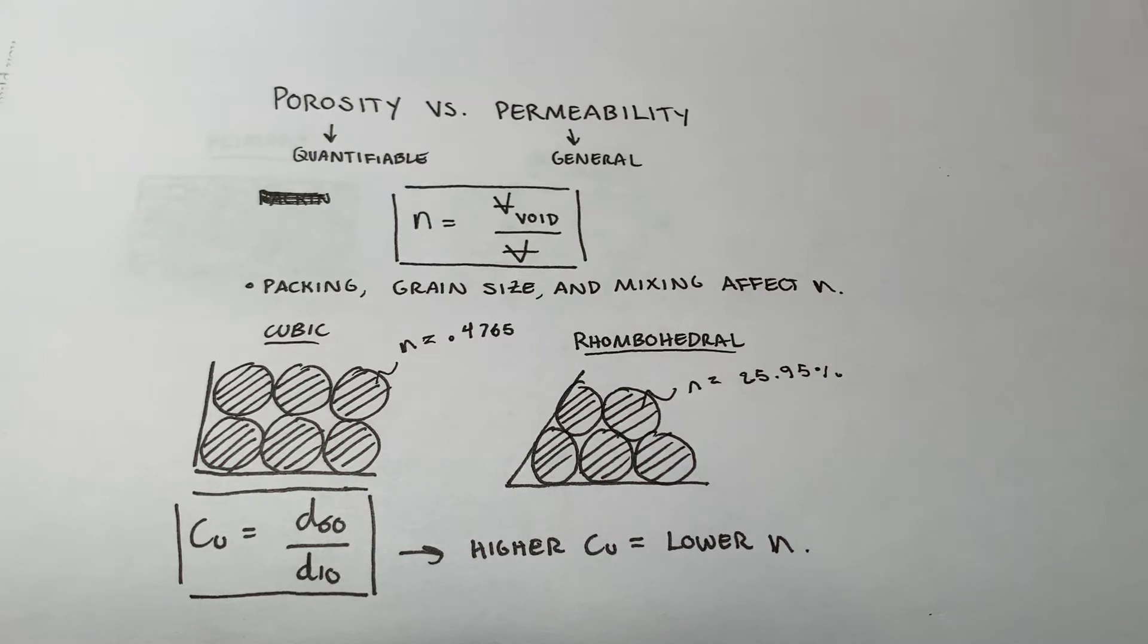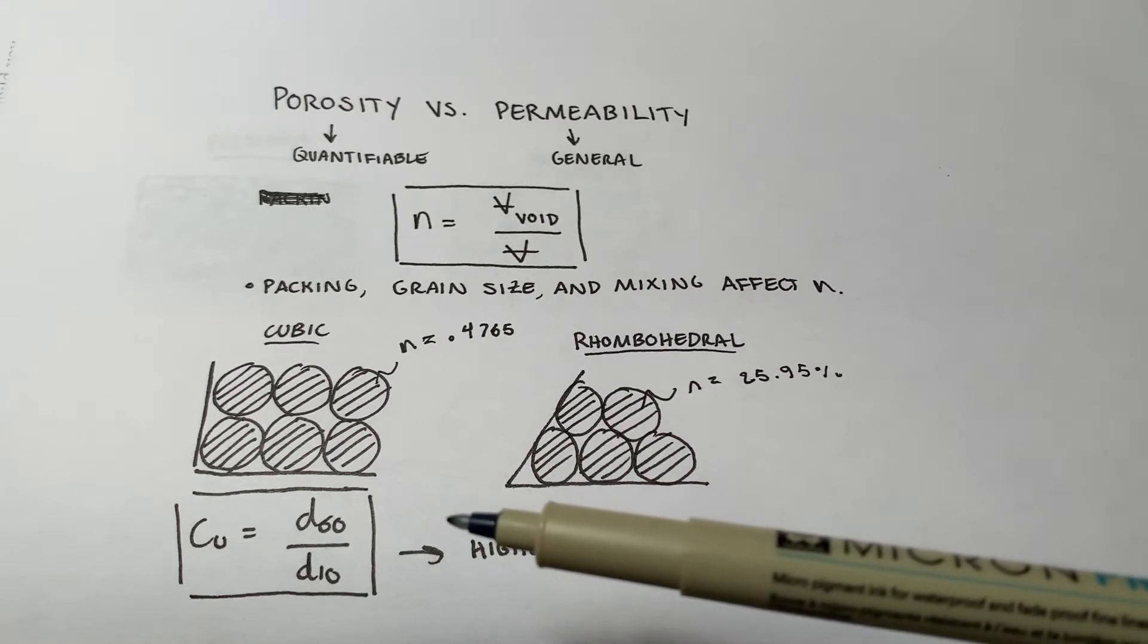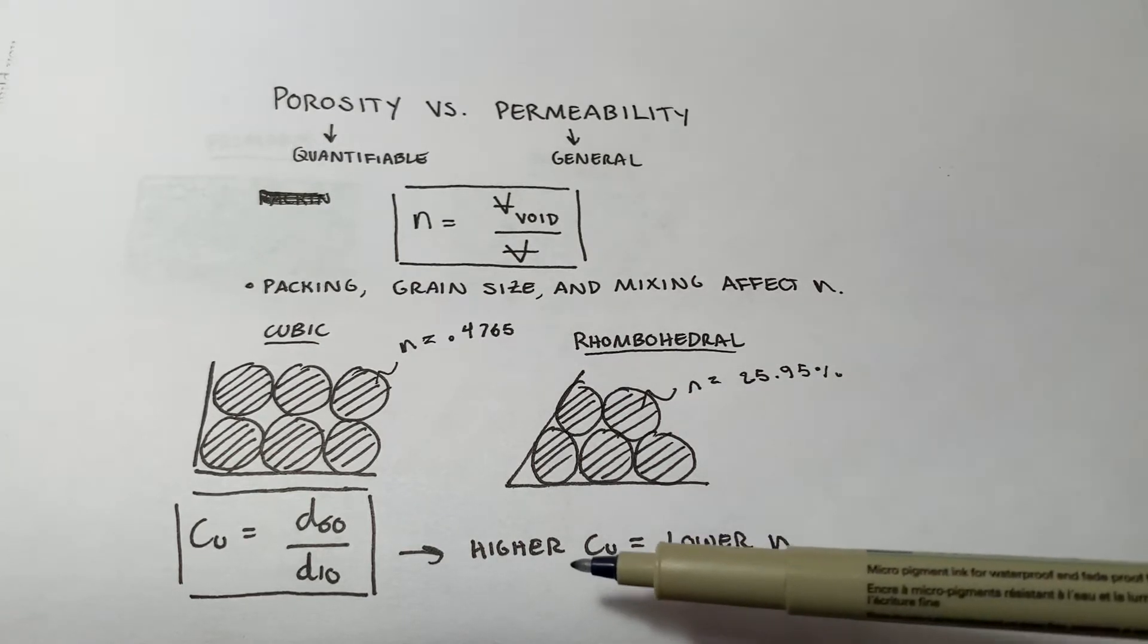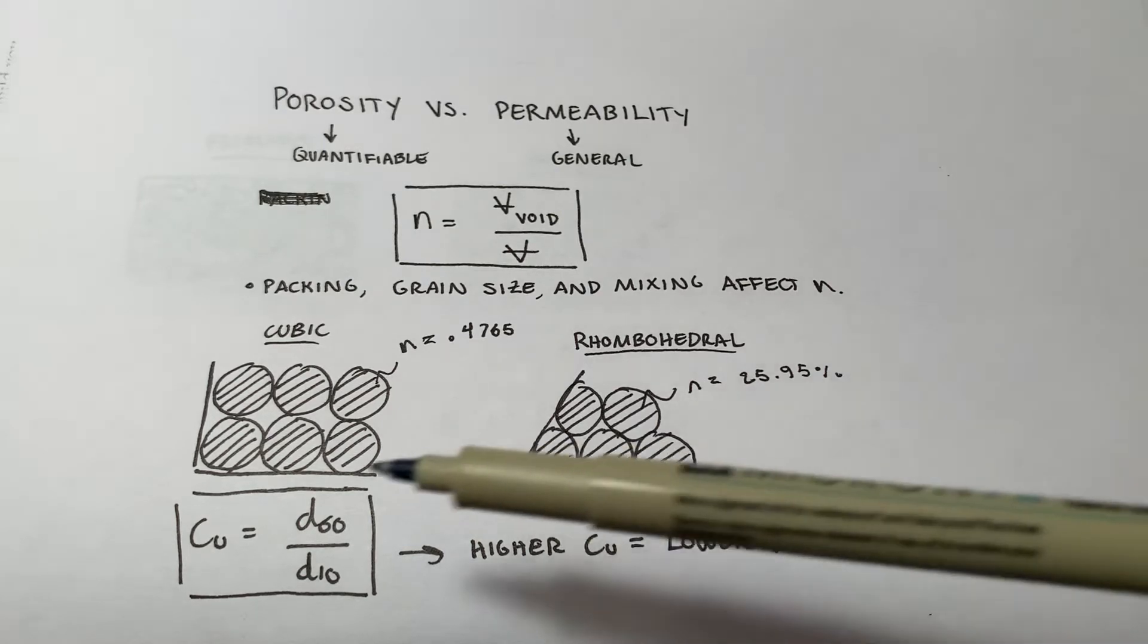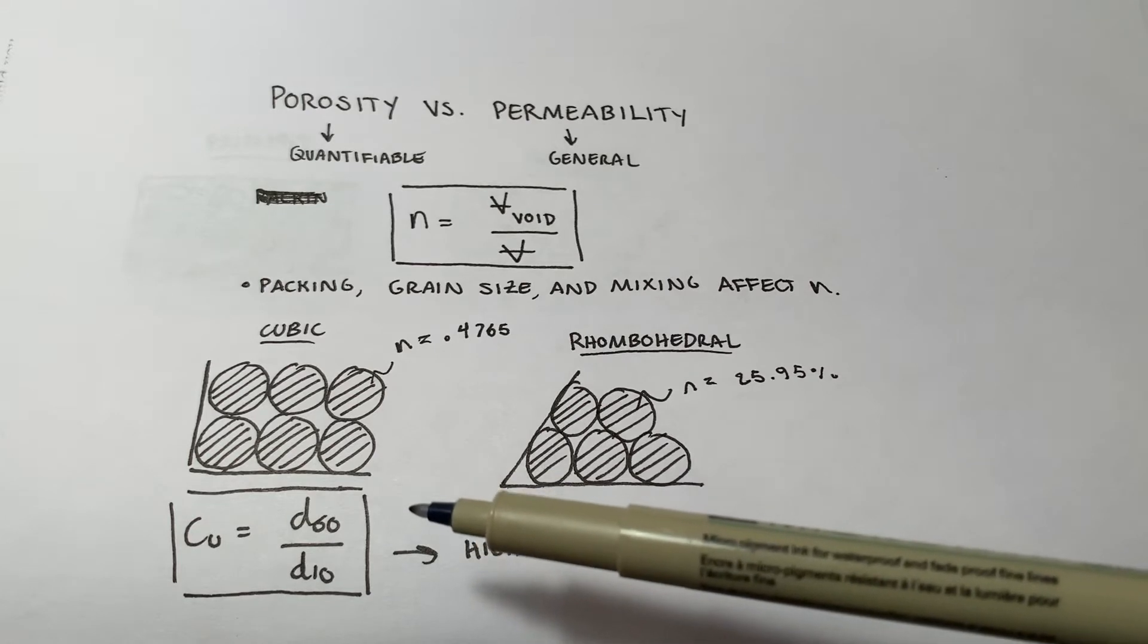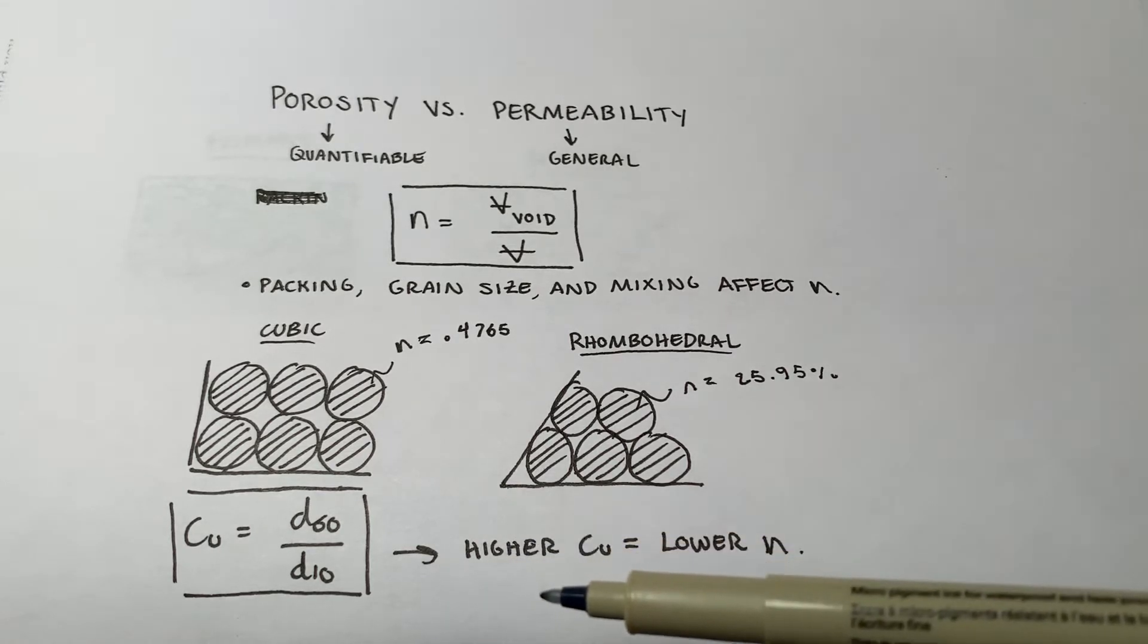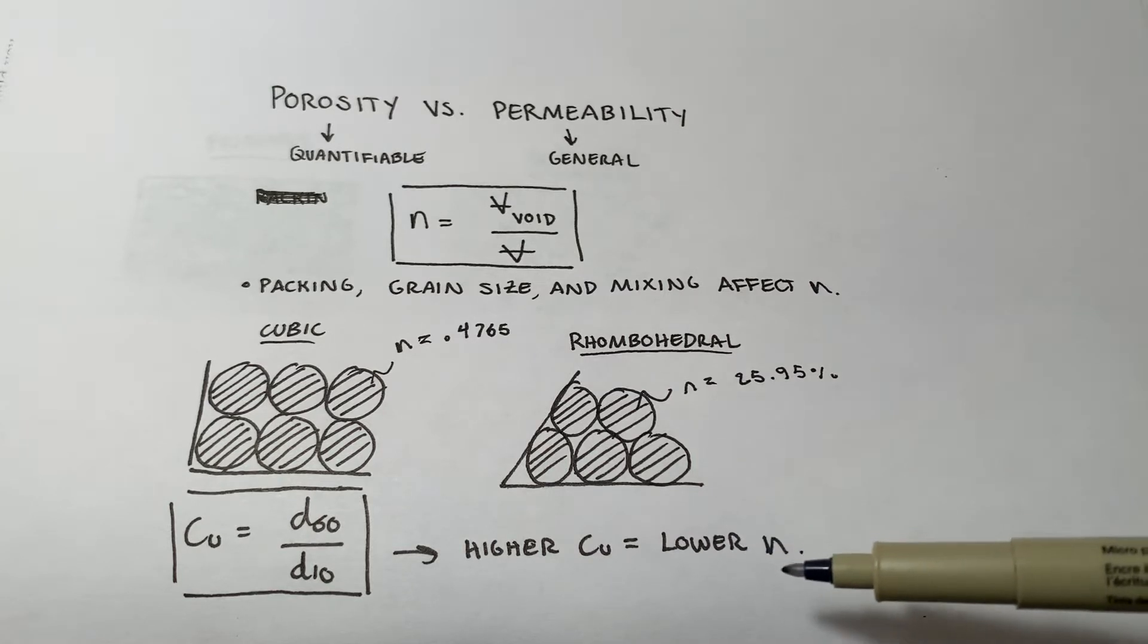So, the grain size distribution, which we quantify with this metric down here, Cu, which stands for the coefficient of uniformity, that's going to tell us D60 over D10. That's the grain size for which 60% of the grains in the specimen are smaller, divided by D10, that's the grain size for which 10% of the grains in the specimen are smaller or finer. So, a higher Cu is going to indicate a larger spread of grain sizes. If you have something like 5 millimeters diameter is your 60% mark, and something like 0.05 is your 10% mark, that would indicate a huge spread, which would generally lower your porosity. So, a larger spread of grain sizes lowers your porosity.